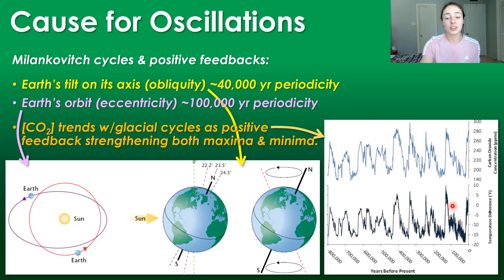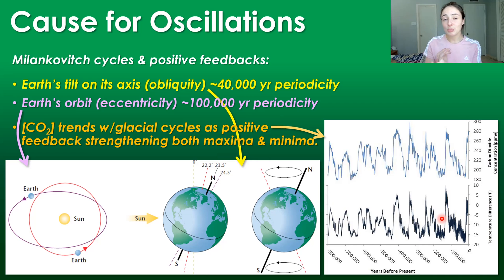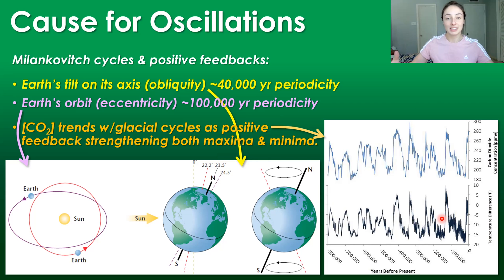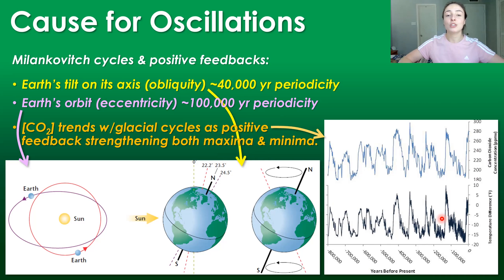CO2 amplifies both glacial maxima and minima, as we can see in the graph over here — carbon dioxide concentrations in the atmosphere have fluctuated very consistently with temperature differences. For example, during the glacial minima or warming trends, a decrease in primary productivity (which takes up CO2), an increase in bacterial organic matter decay (which releases CO2), and an increase in the melting of methane hydrates (which releases carbon as methane) all cause global warming to become exacerbated.